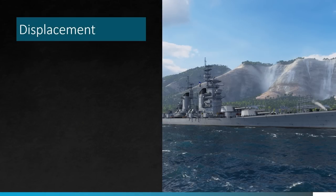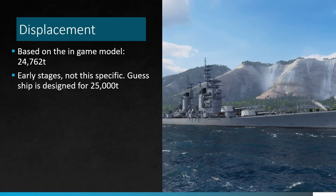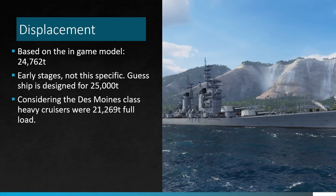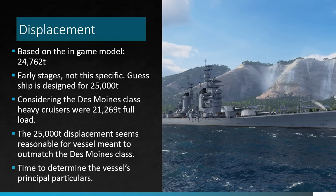What about the displacement? You set out all the requirements and figure out weapons, so what's the displacement? The best we can figure from the in-game model is that the vessel is about 24,762 tons, but during a design phase nobody's that accurate. My guess is she's probably based on some sort of 25,000-ton design. Considering the Des Moines class heavy cruisers were 21,269 tons fully loaded, this makes sense because the vessel is supposed to outperform the Des Moines. A 25,000-ton displacement, with bigger guns and better armor, does make sense that she'd displace a bit more.